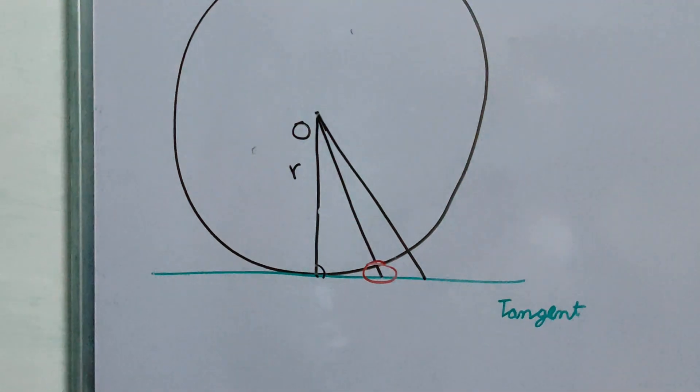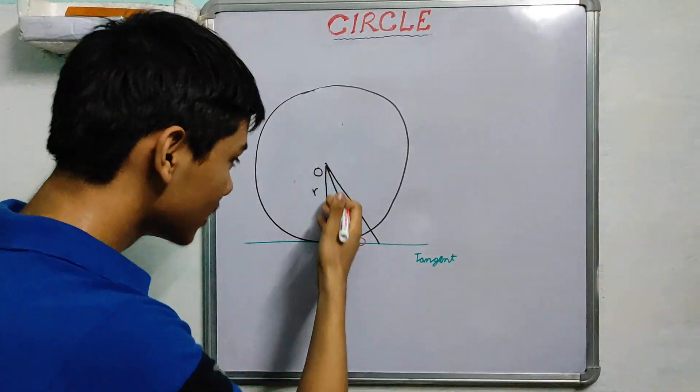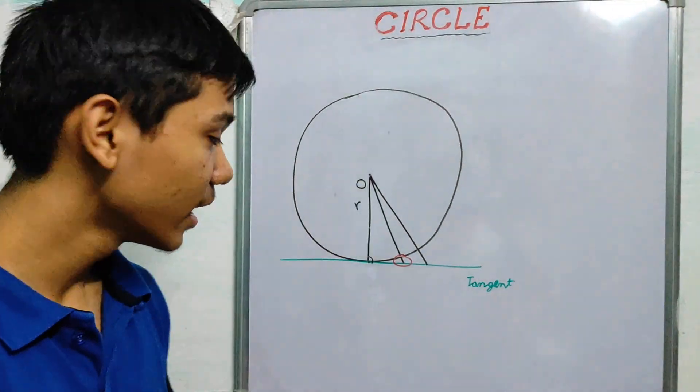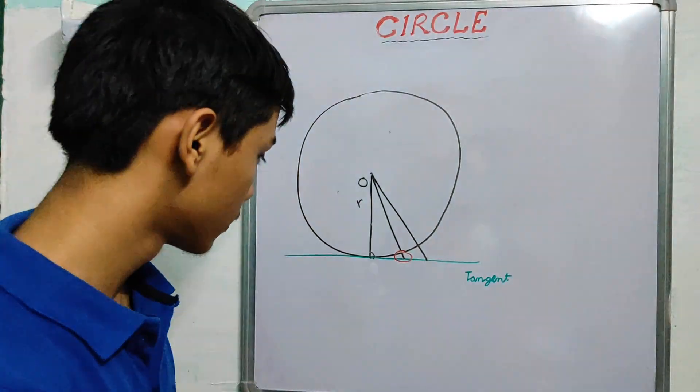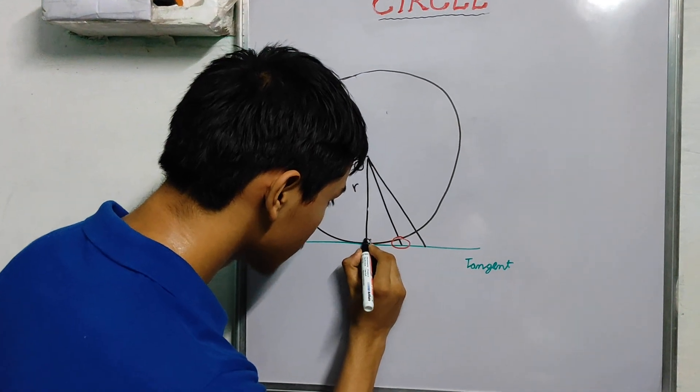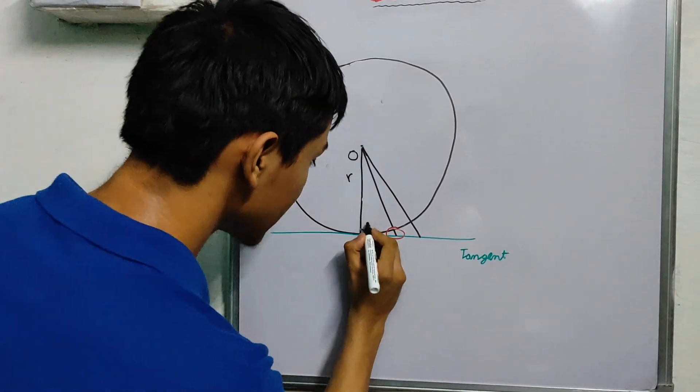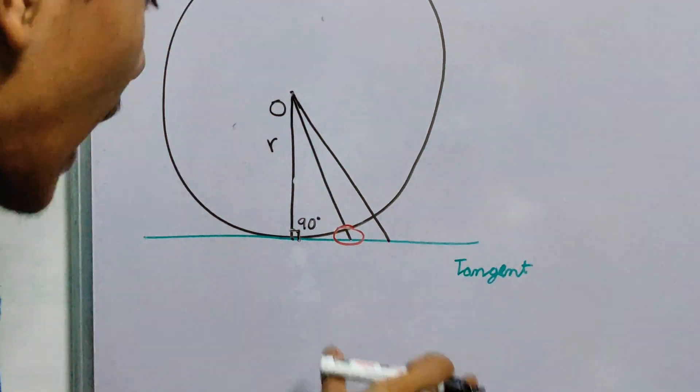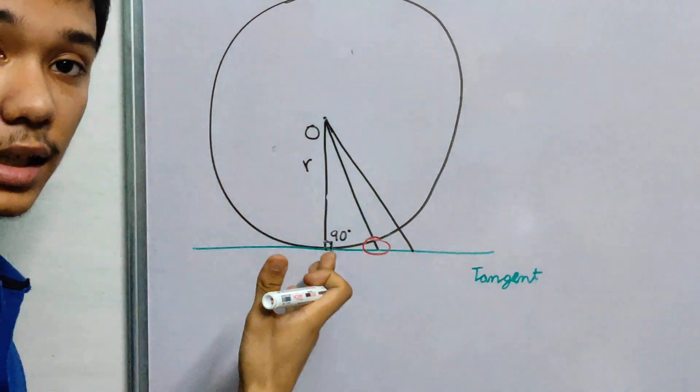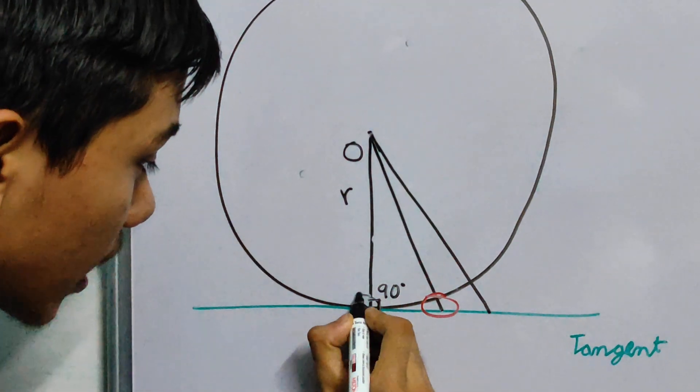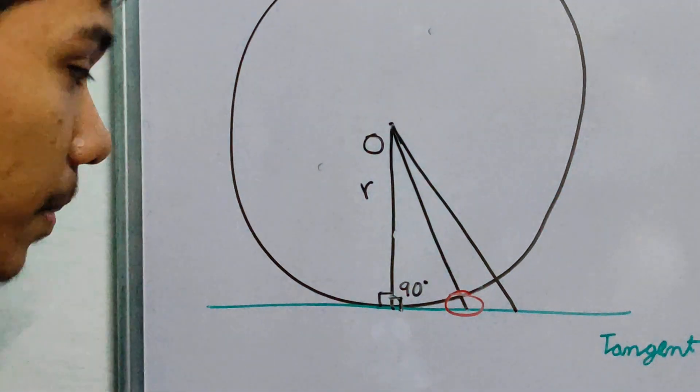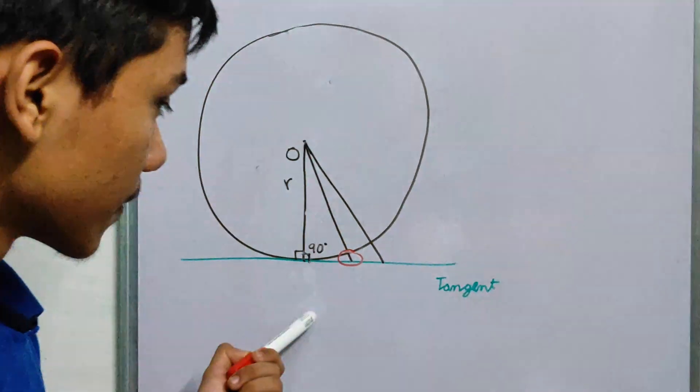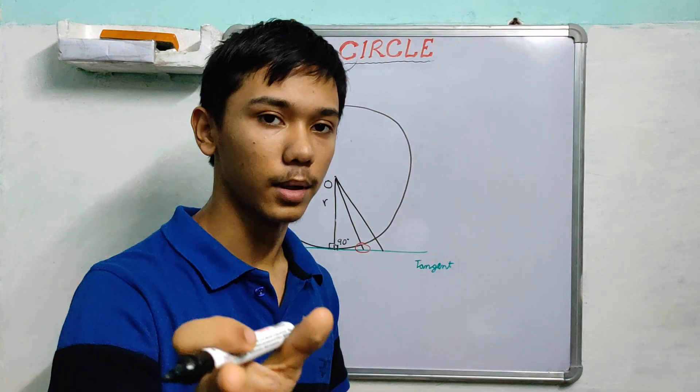And if you remember the theorem correctly, this line will be, that's right, this will be perpendicular. The shortest line is always perpendicular. So this angle, this will be perpendicular, and so we can say this angle is 90 degrees. Or in other words, the tangent is always perpendicular to the radius, that's a thing you should remember.